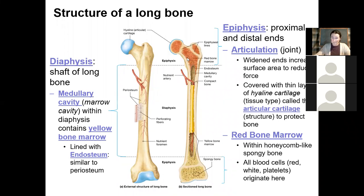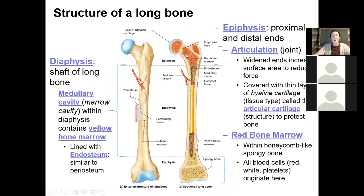All of your red blood cells, all of your platelets, and the original white blood cells are made within the spongy bone in the epiphyses. Take-home message: within the epiphyses, there's a lot of spongy bone, and within that spongy bone is the red bone marrow — that is where we are making our red blood cells.